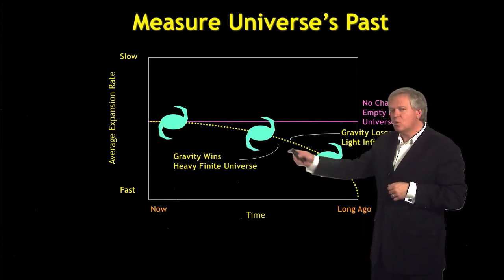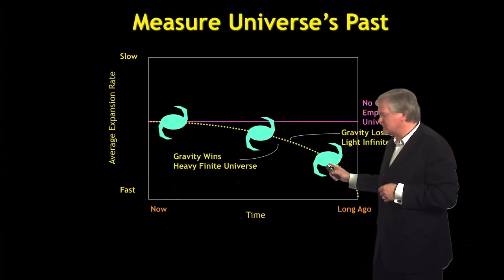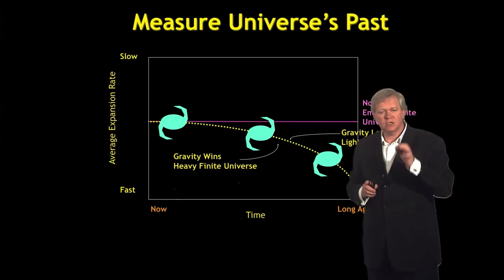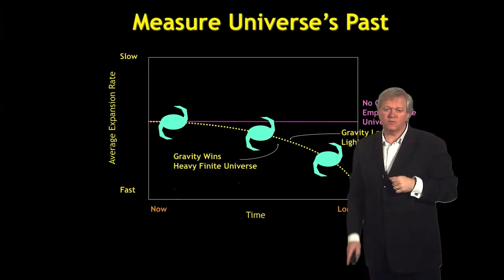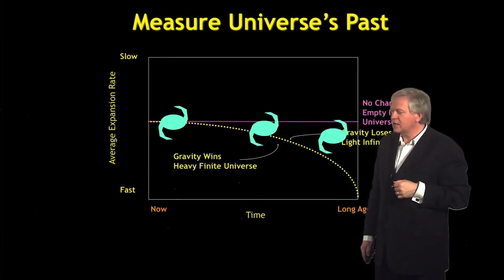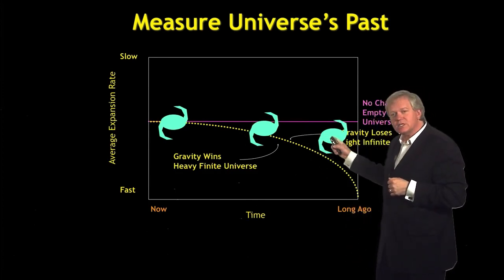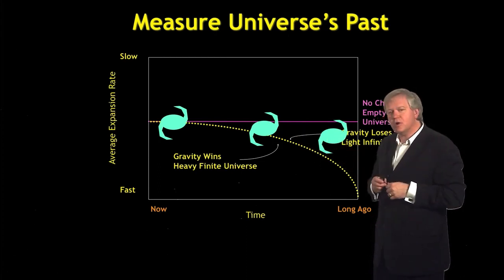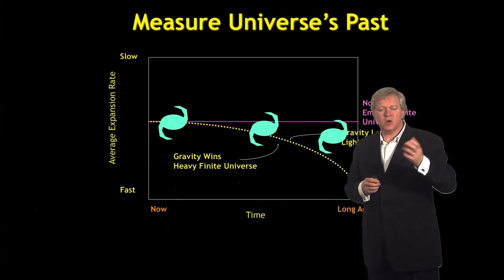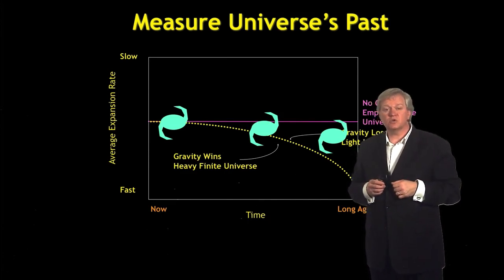Imagine when I look back in time, my galaxies lie exactly on that line. Then I know the universe is right on that edge where we're not sure what its ultimate future is. On the other hand, if the universe is slowing down slower, the galaxies lie in this part of the diagram, then we know that the universe is going to exist forever.